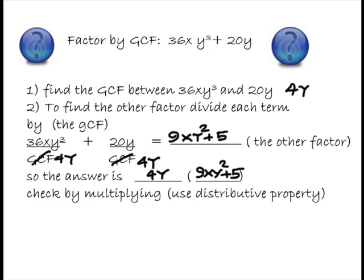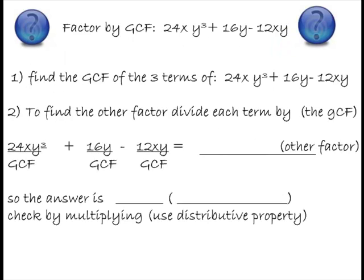Last problem coming up. This one has three terms. So, what we want to do here is factor by GCF, 24xy to the third, plus 16y minus 12xy. So, we haven't done one of these, but the procedure, or the algorithm it's called, is very similar. Number one, find the GCF of the three terms of this expression.